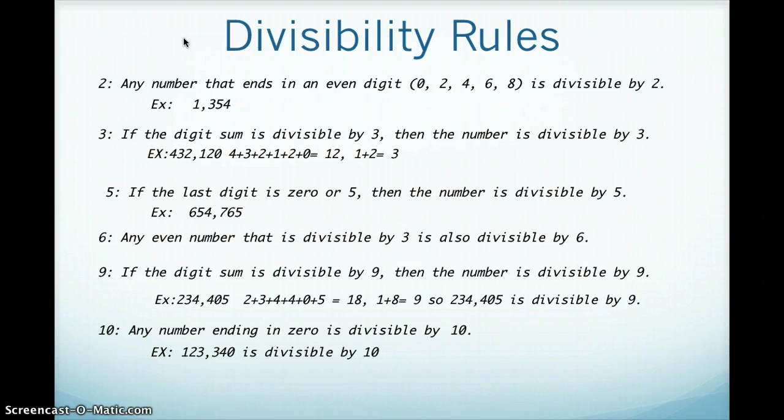9 is like 3, except whenever you add the digits, get the digital root, the sum of the digits, it's got to be a 9. And if it's 9, then you know it's divisible by 9, such as 234,405. So 2 plus 3 is 5, plus 4 is 9, 9 plus 4 is 13, 13 plus 0 is still 13, plus 5 is 18, and then 1 plus 8 equals 9, so 234,405 is divisible by 9.